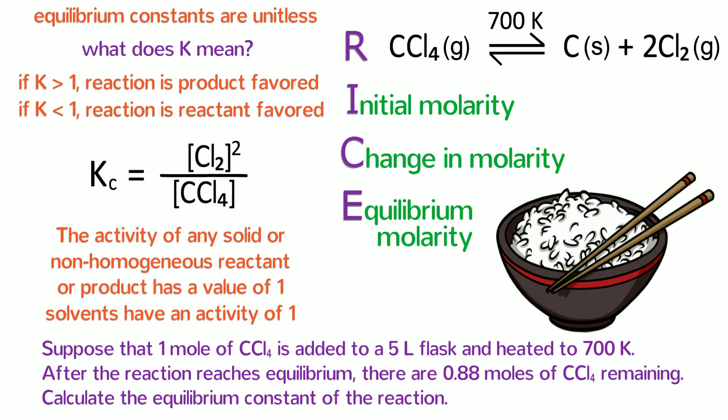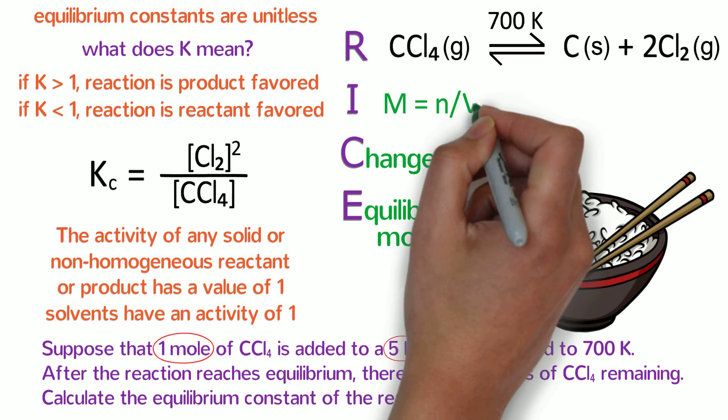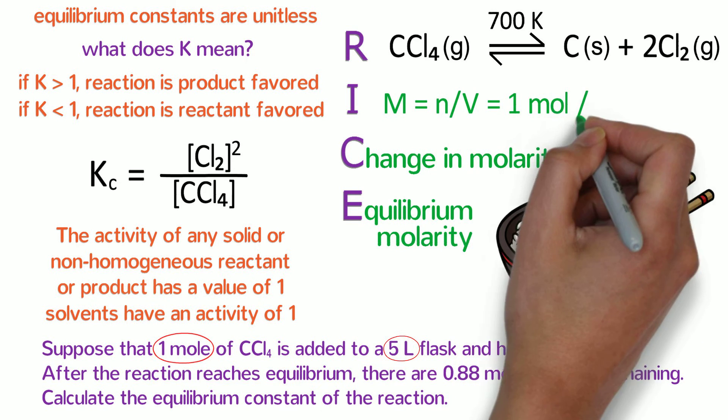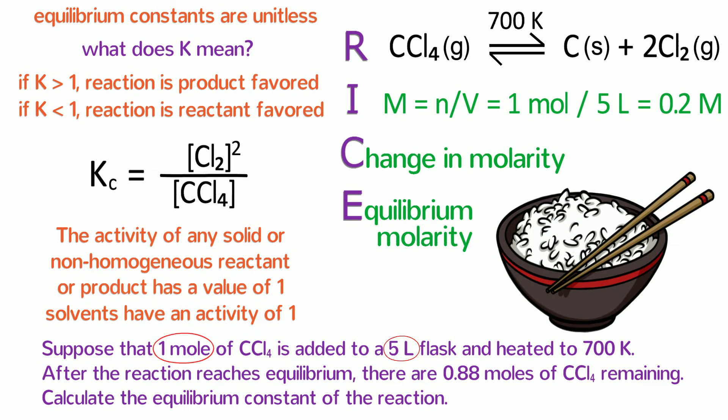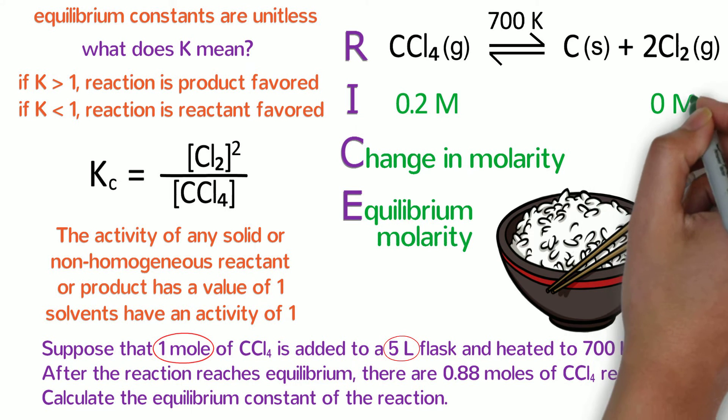The question tells us that we are starting out with an initial amount of 1 mole of carbon tetrachloride in a 5 liter flask, so we can calculate its initial molarity using the equation M equals n over V, which is 1 mole divided by 5 liters or 0.2 molar. We put the 0.2 directly under the CCl4. We can ignore carbon because it is a solid, and there is initially no chlorine gas, so we put a 0 underneath Cl2.